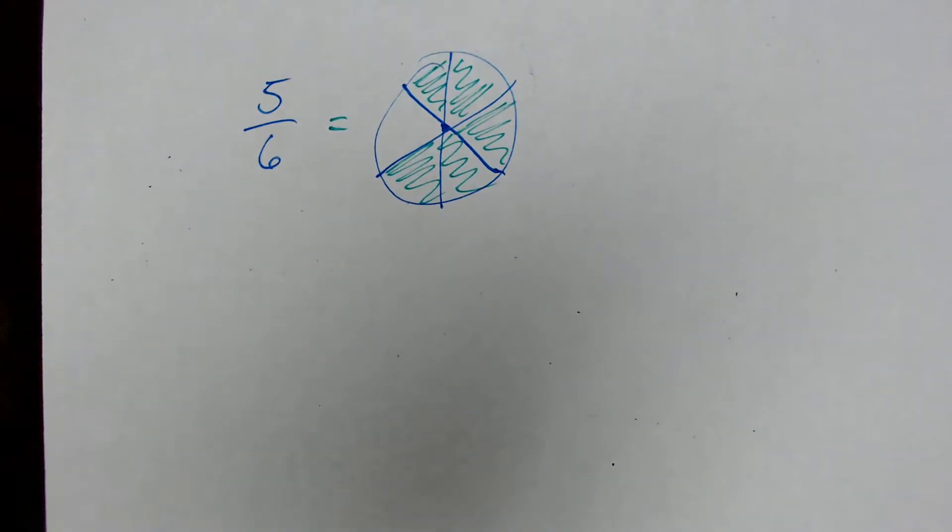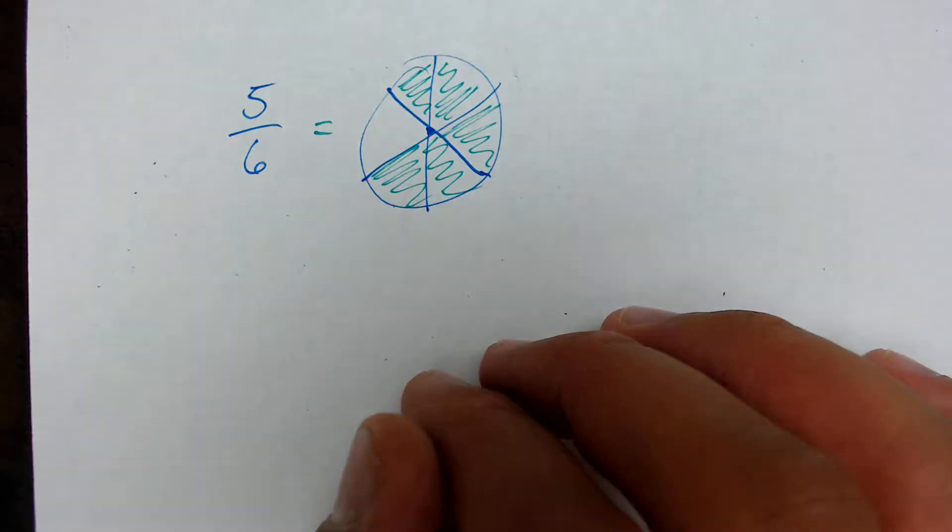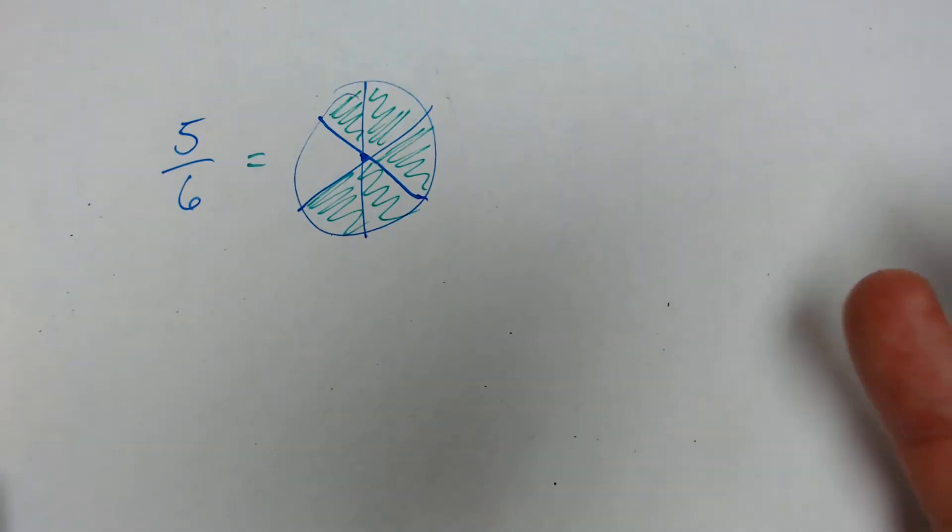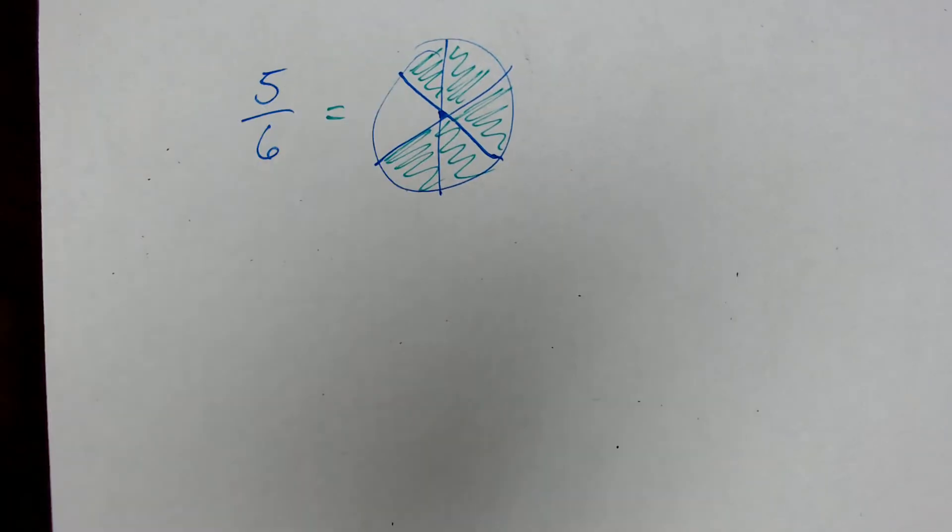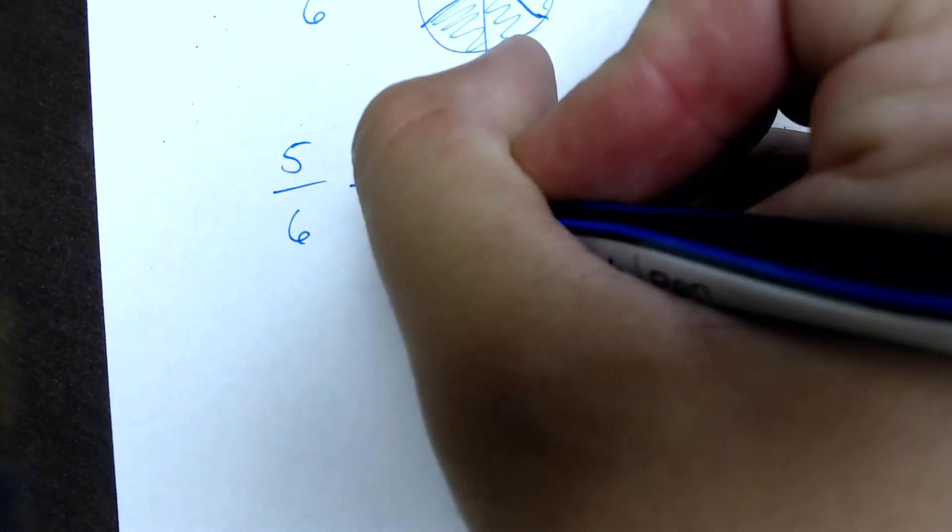So now that we understand that logic of six is just telling us how many groups we have, and then five is telling us how many of those groups we have, or how many of those groups we're dealing with, we can use that logic to understand addition of fractions with the same denominator. So let's say, for example, we have the fraction five sixths minus two sixths.